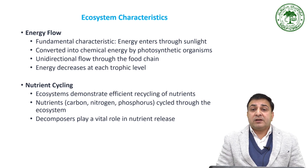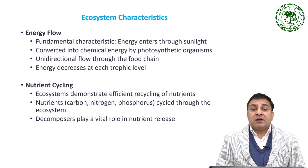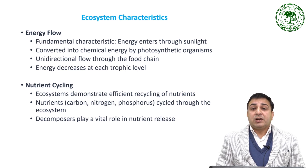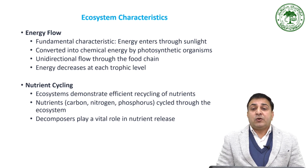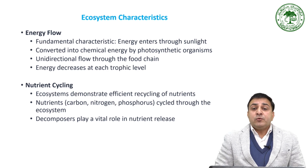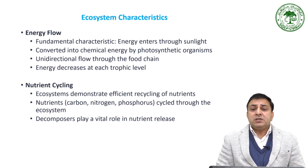Energy flow is one of the fundamental characteristics of the ecosystem. Energy enters the ecosystem through sunlight, which is then converted into chemical energy by photosynthetic organisms like plants. This energy is transferred through the food chain as organisms consume each other. Energy flow is unidirectional, with energy decreasing at each trophic level due to metabolic processes.